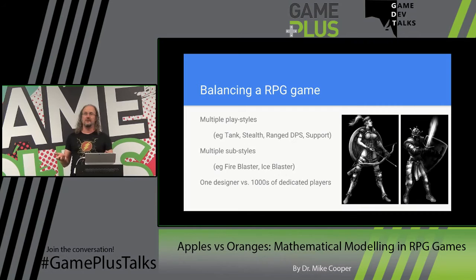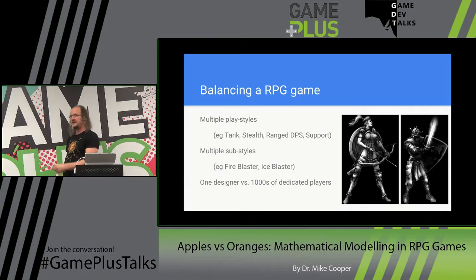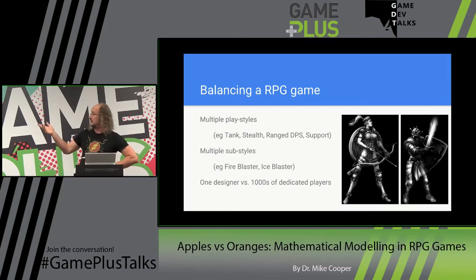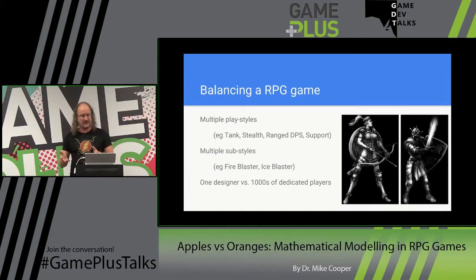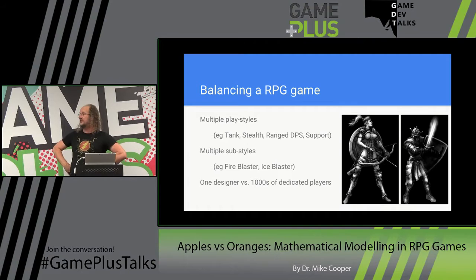Maybe you want a stealth play style where you sneak up behind people. Maybe you want a ranged damage one like the Amazon — a glass cannon who's vulnerable but someone's going to die in the next three seconds. Being a tank is great when you come home drunk. You may even play support, running around healing people. Each of these play styles has multiple sub-styles. None of these should be better than the other. If everyone on the forums says there's no point being anything other than a fire tank, you've failed as a designer.